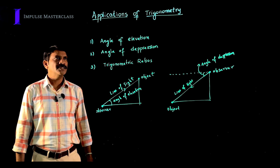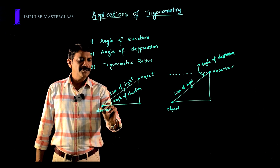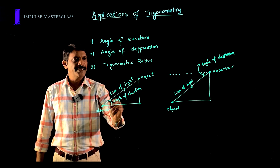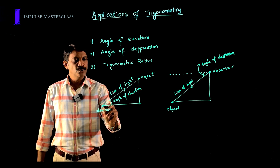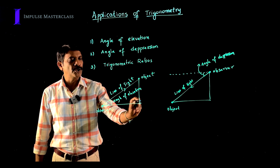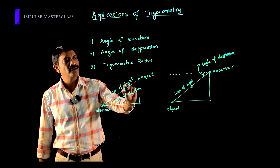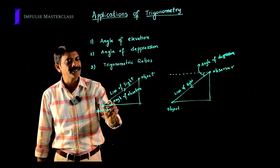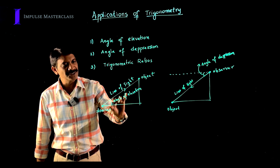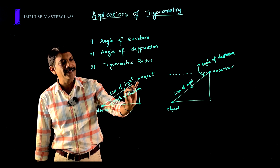Now let us understand what angle of elevation is. If an observer is here and there is a horizontal through the observer, and the object is above, the observer has to look up at the object. The angle made by this line of sight with the horizontal is called the angle of elevation. The line of sight goes from the observer upward to the object, and the angle between the horizontal line and the line of sight is the angle of elevation.